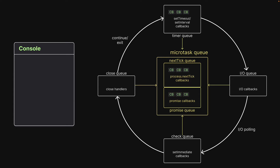The first callback from the next tick queue is dequeued and executed, which logs a message to the console. This is followed by the second callback, which also logs a message. The second callback contains an additional call to process.nextTick, resulting in a new callback in the next tick queue. Execution continues and the third callback is dequeued and executed. Finally, the newly added callback is also dequeued and run on the call stack, resulting in the fourth log statement in the console. Now that the next tick queue is empty, the event loop proceeds to the promise queue.